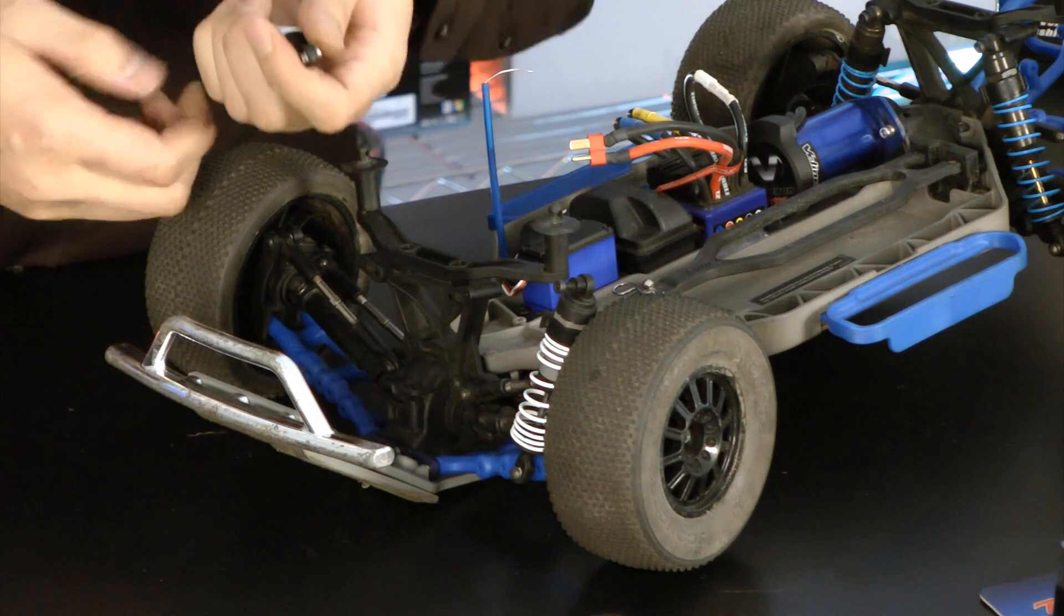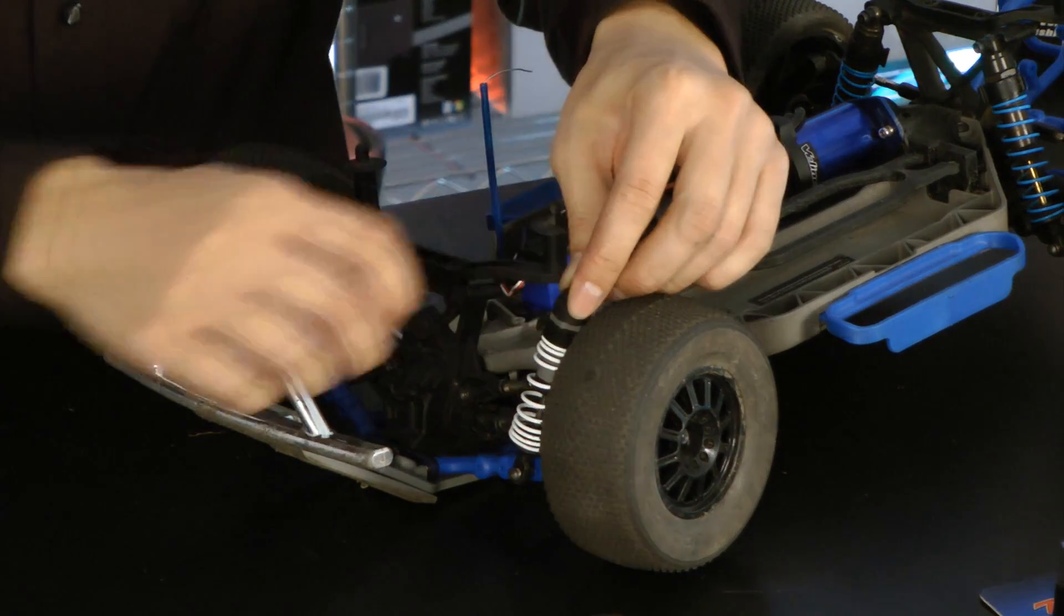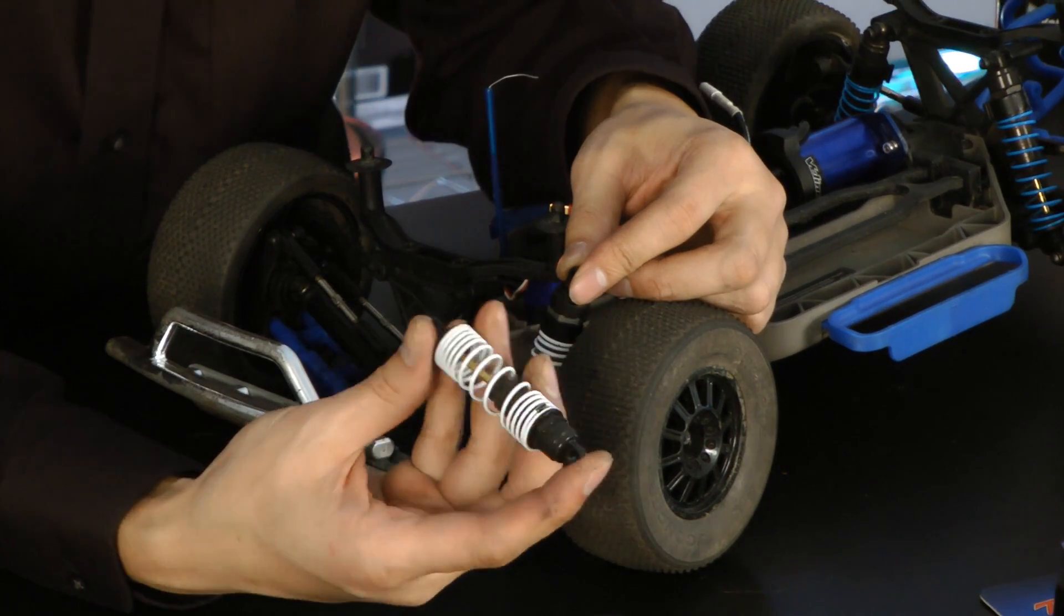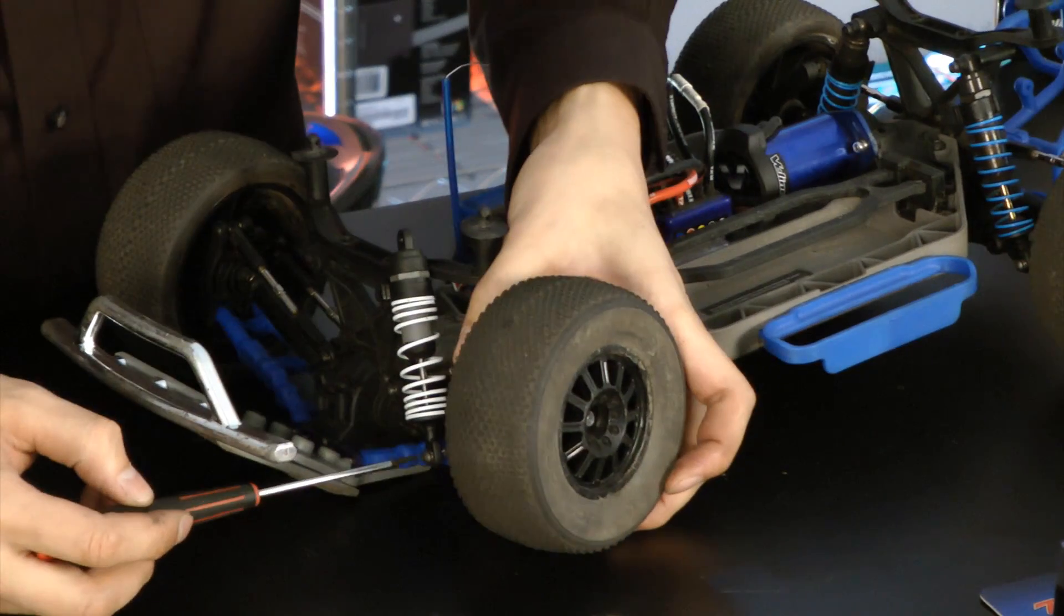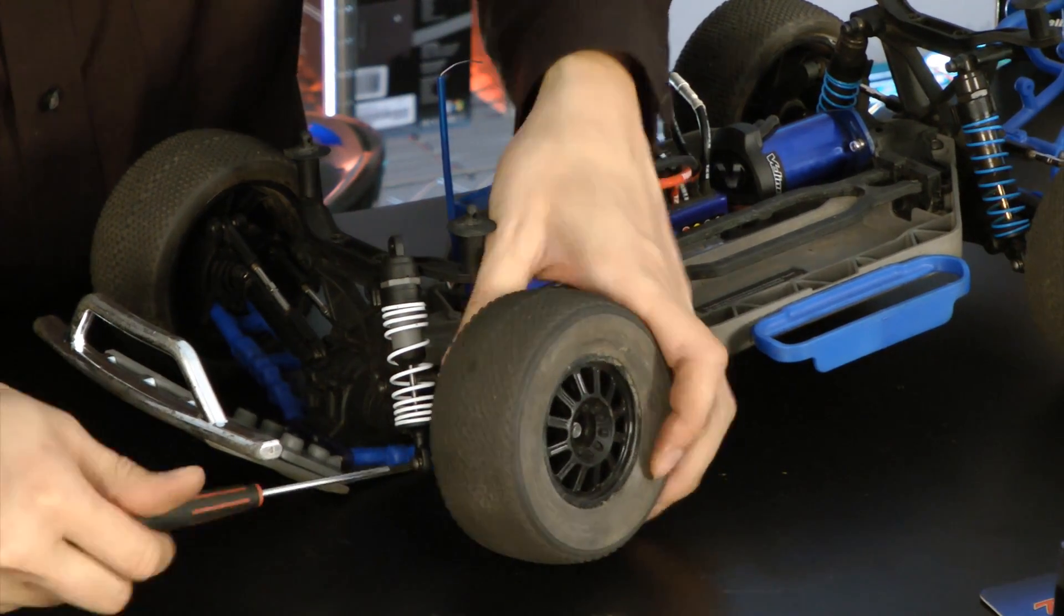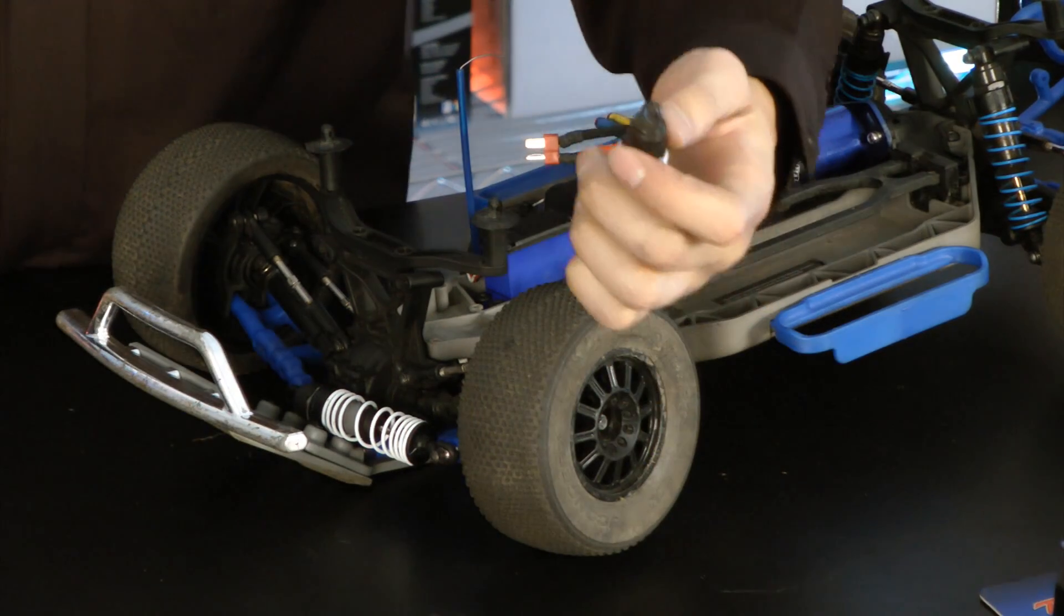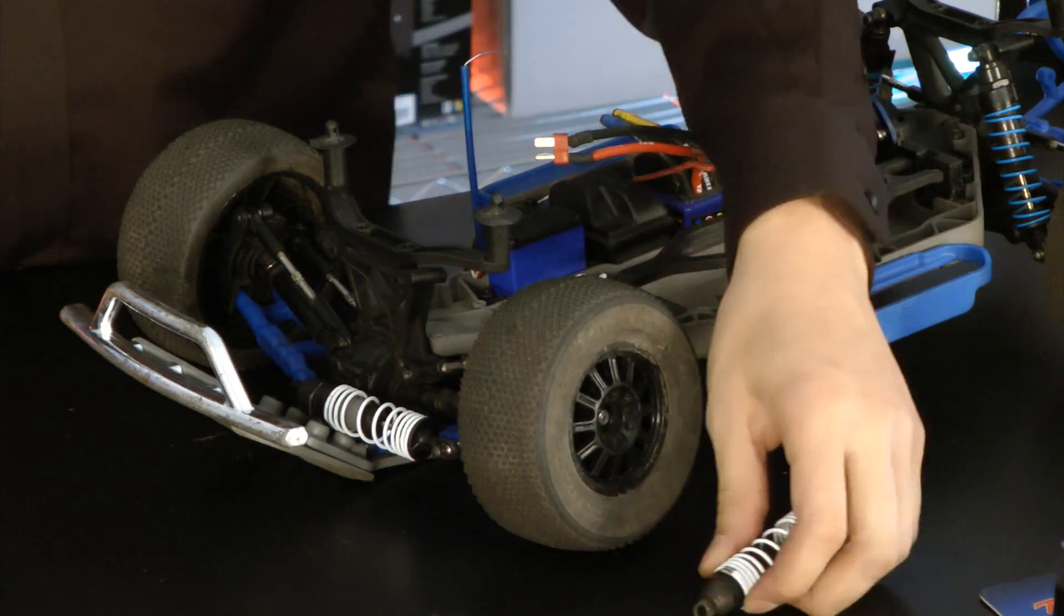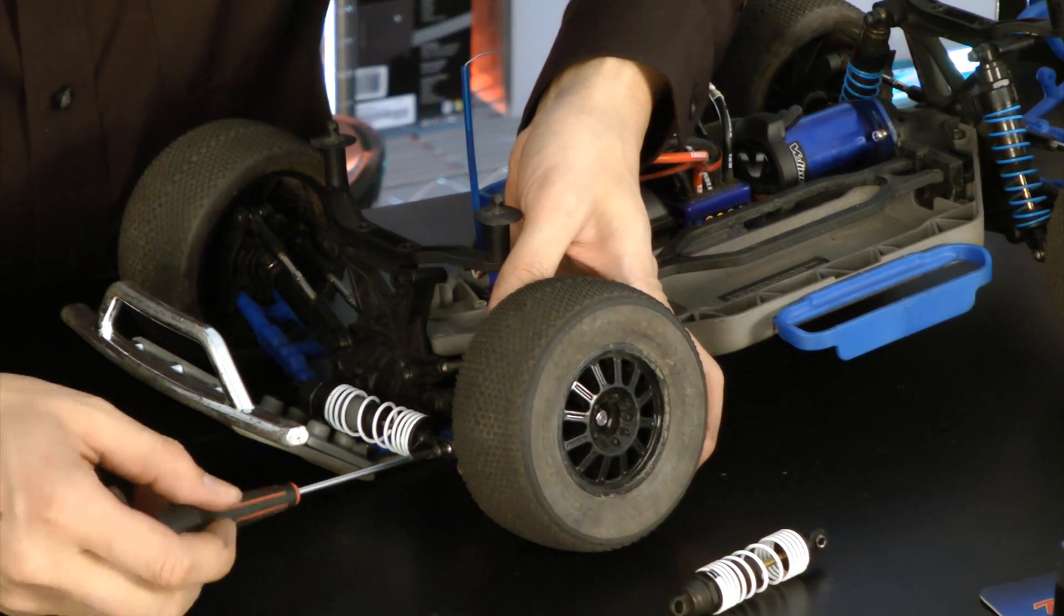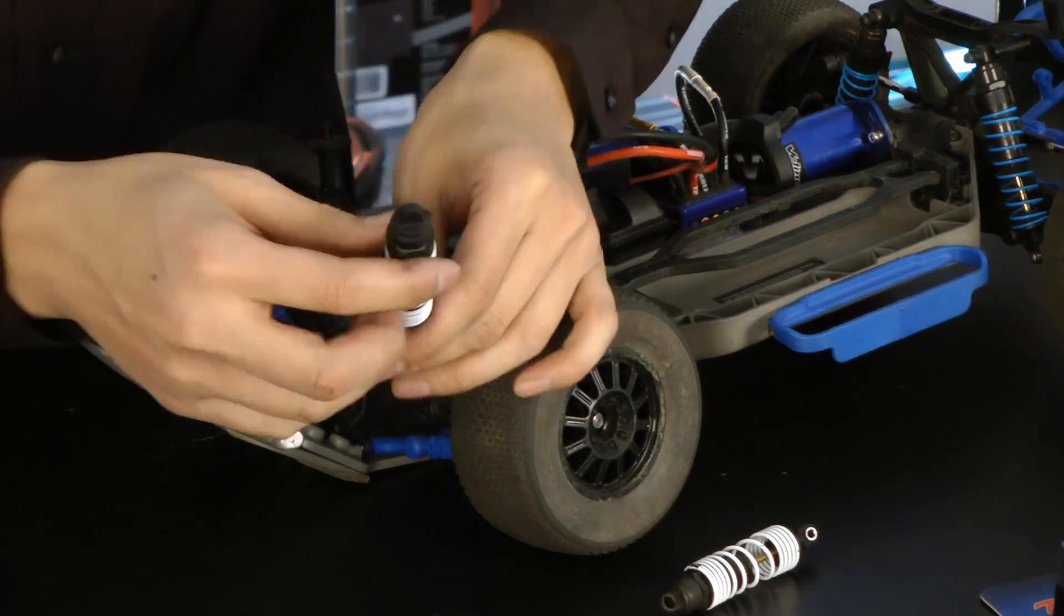The stock shocks have plastic body construction versus the big bores is all aluminum. The great thing about that is the shock caps on the big bores, being aluminum, will not pop off like the plastic ones on the stock ones will.